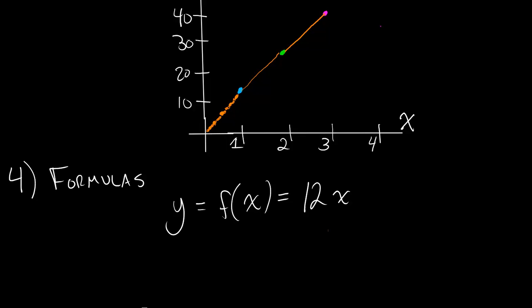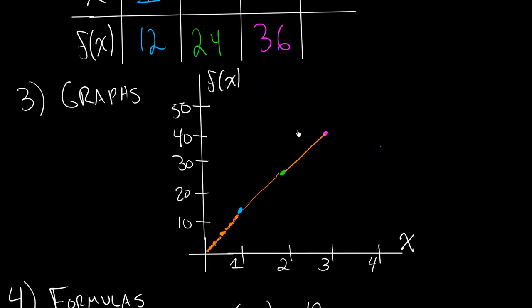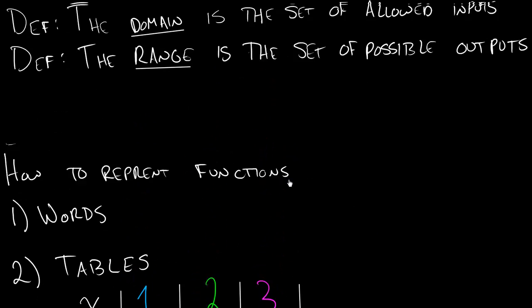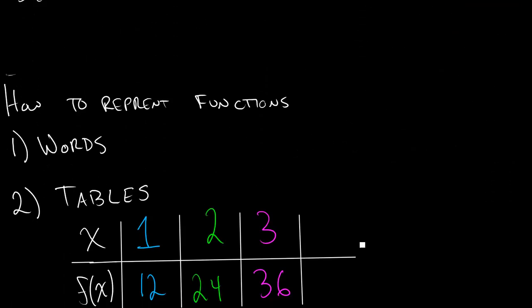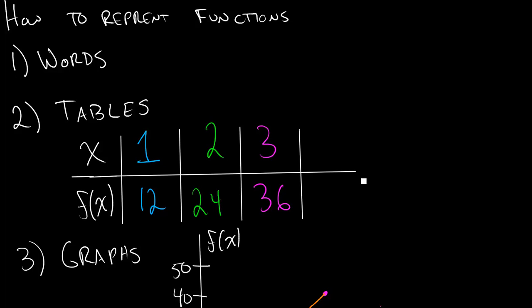All right, so big ideas from this video. So a function is a rule. It's a rule that assigns each input an output. And there's four main ways we can represent it. We can represent it with words. We can represent it with tables. And then graphs and functions. And we need to be comfortable with working with all three.